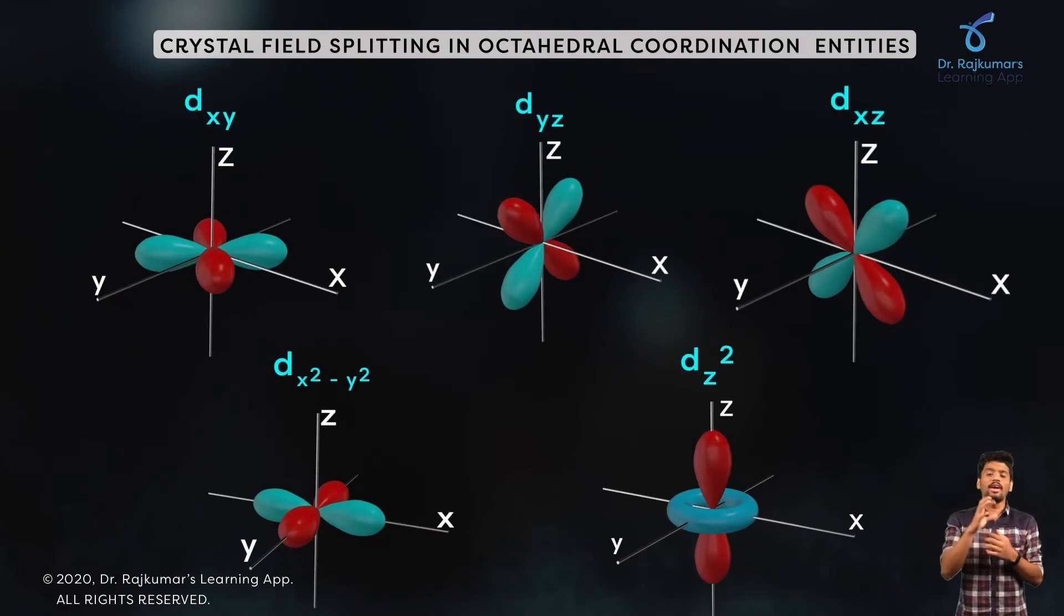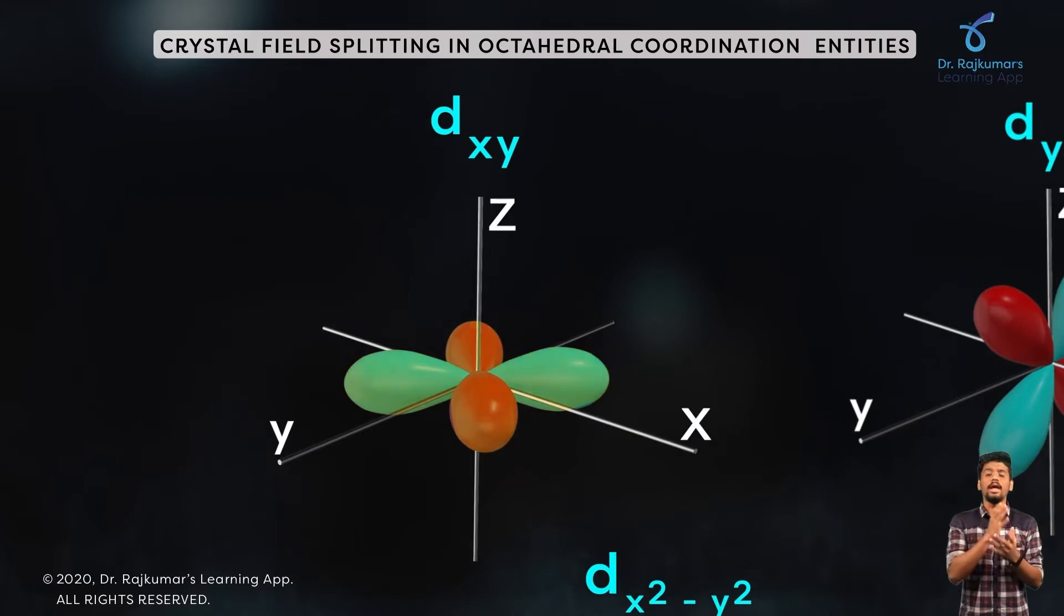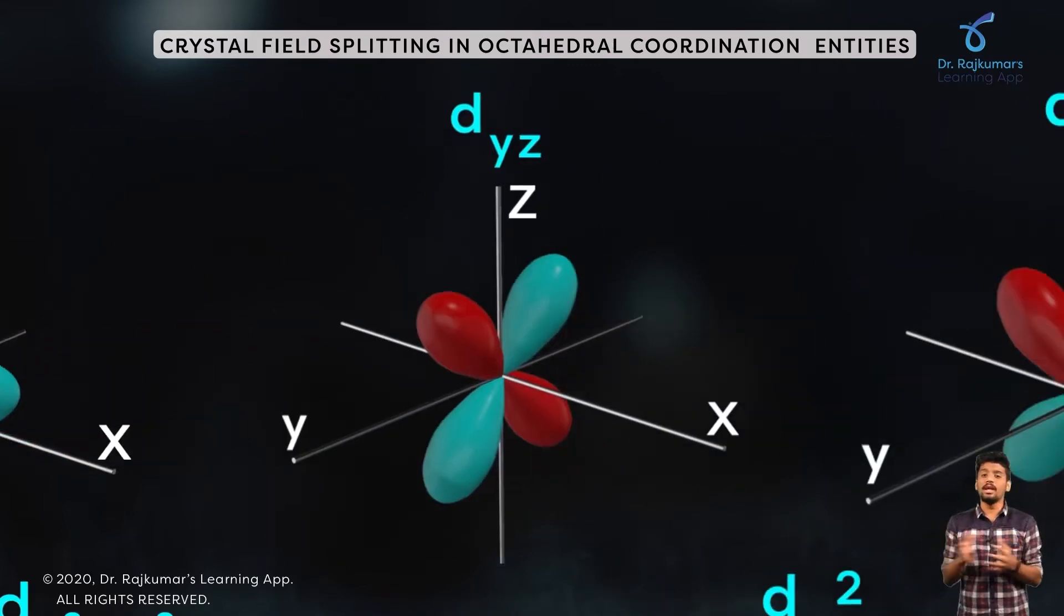If you look at all the five d orbitals: in the d_xy orbital, it lies between the x and y axis; in d_yz, the orbital lies between the y and z axis; and in d_xz, the orbital lies between the x and z axis.